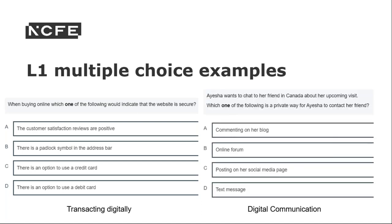Here is an example of a multiple-choice question at Level 1 from the Digital Transactions section. The correct answer is B — well done everybody who got that right. The next question relates to digital communication and is especially relevant given how we've all been working during the pandemic. The answer is D, and you might like to use a question like this as part of your delivery with learners, discussing why the other three options wouldn't be appropriate.